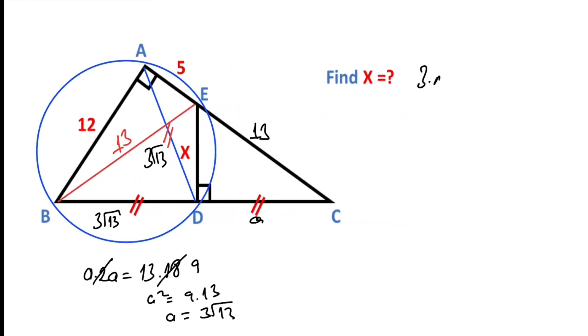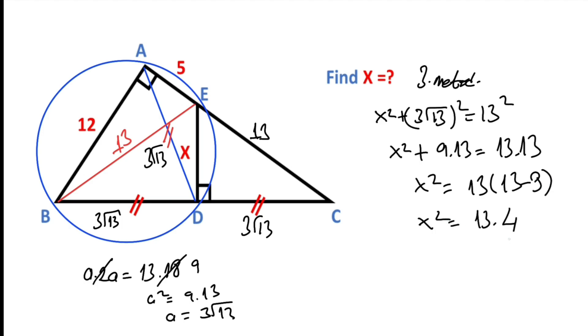Or you can think like this. Let's call this third method. We know this side equals 3 root 13. And for this triangle, if we apply Ptolemy's theorem, maybe you can forget the theorem or you don't know. It doesn't matter. You can also apply Pythagorean theorem. Therefore, x squared equals 13 times (13 minus 9). So x squared equals 13 times 4. Let's square root both sides of the equation. x is going to be 2 root 13.